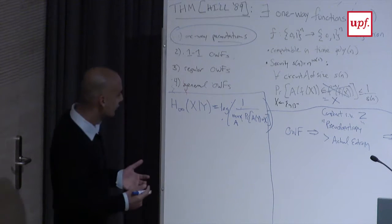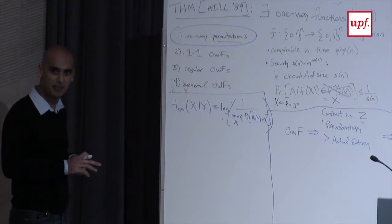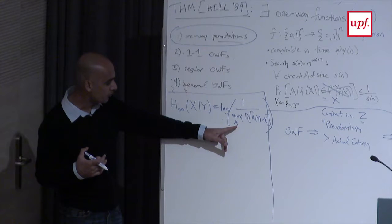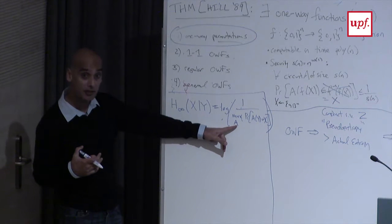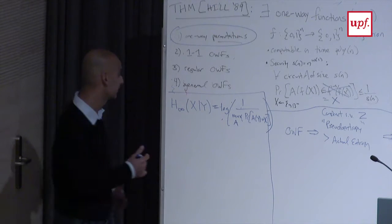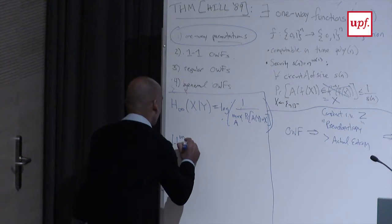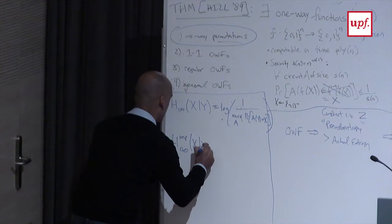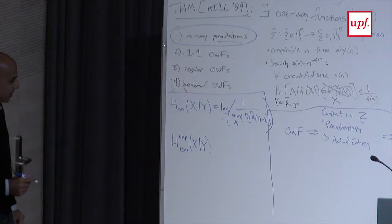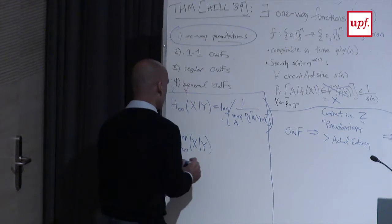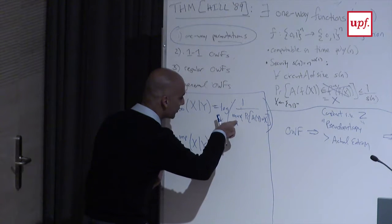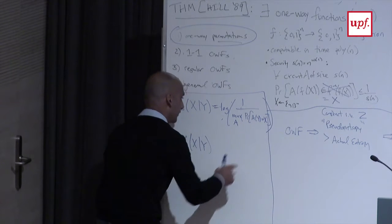A very natural way to get a computational analog of entropy is to just restrict ourselves to efficient algorithms A in this formulation of min-entropy. This is called unpredictability pseudo-entropy. It's the same definition but we replace the max to be over adversaries of our security bound — some super-polynomial function. The unpredictability entropy is at least k if and only if every efficient algorithm can guess X from Y with probability at most 1/2^k.